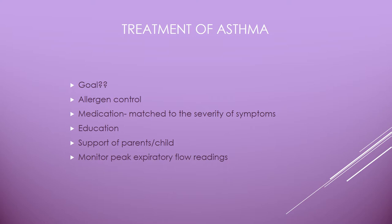For allergen control, tell the family to address roaches and mice, eliminate smoking, avoid wood burning stoves, eliminate damp conditions, and possibly replace carpet with tile or wood floors. Medications fall into two categories: long-term control medicines and quick-relief medicines. Long-term meds include inhaled corticosteroids, cromolyn sodium, nedocromil, long-acting beta-2 agonists, methylxanthines, and leukotriene moderators. Quick-relief meds include beta-2 agonists, anticholinergics, and systemic corticosteroids.